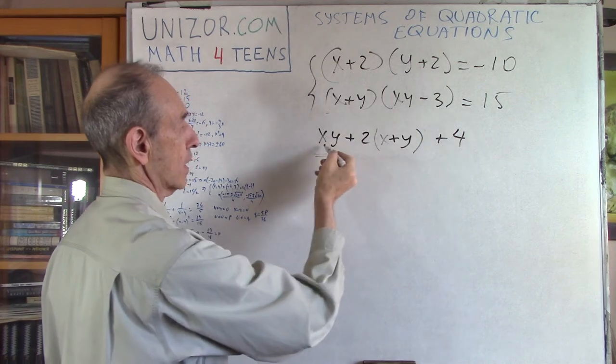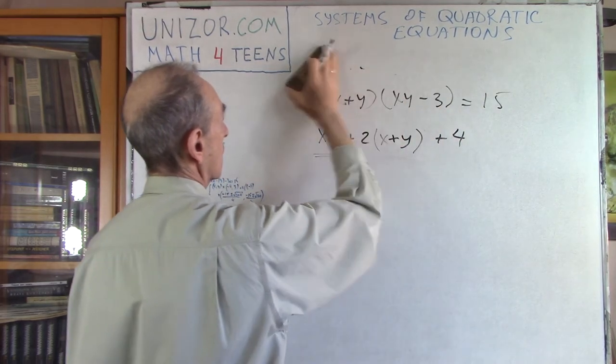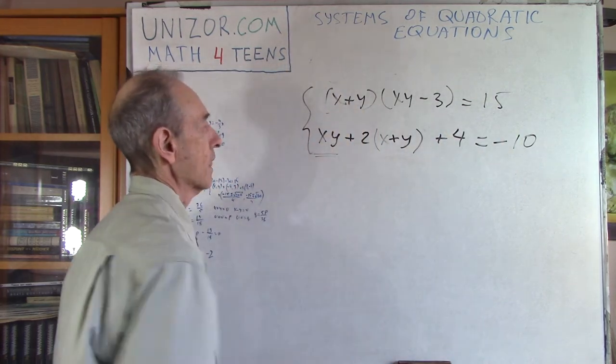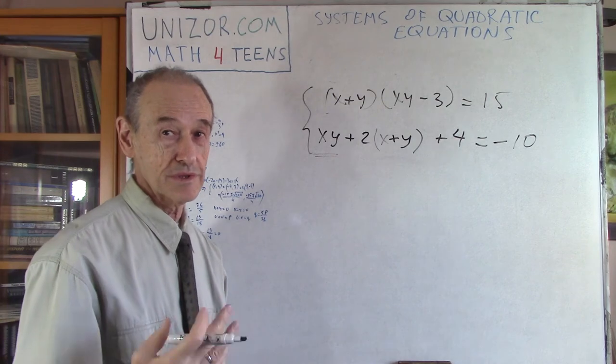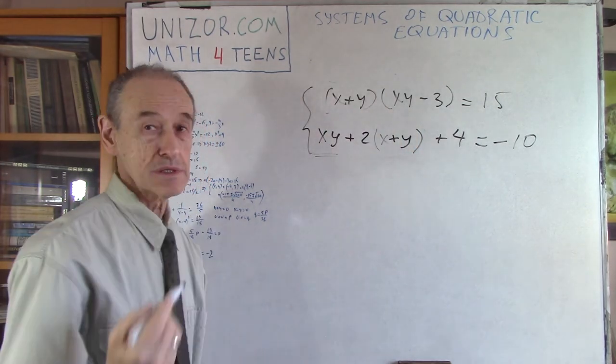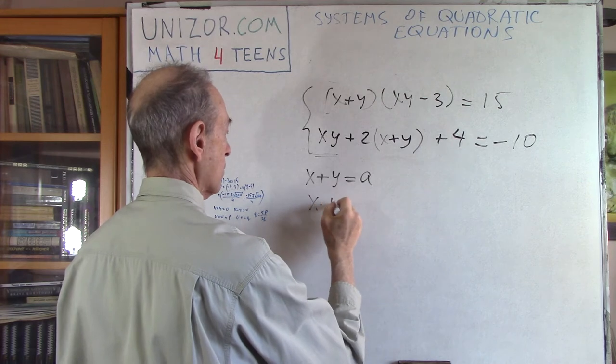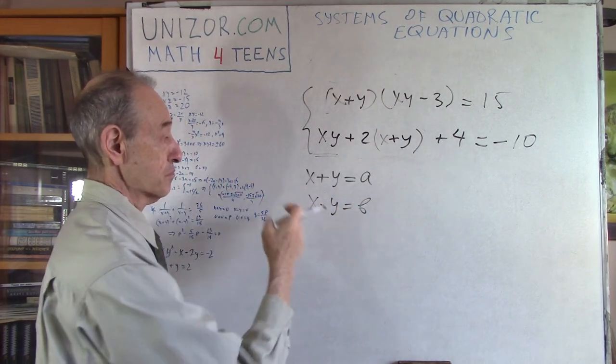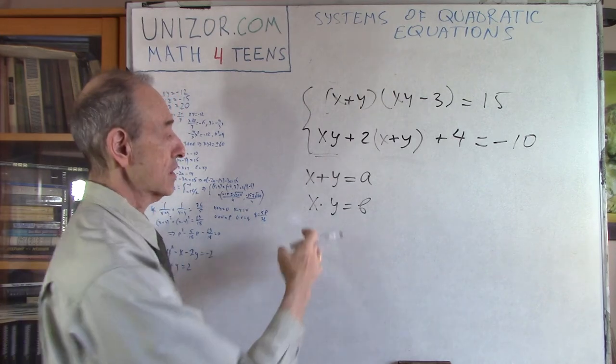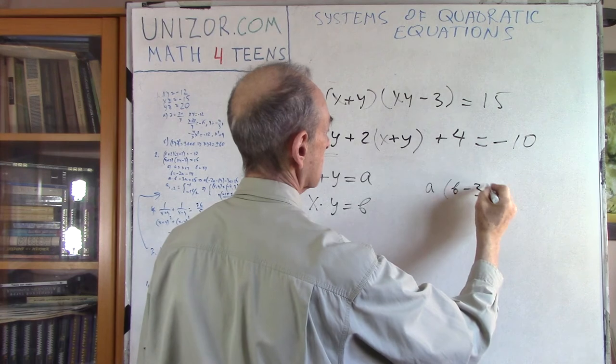Now I see that there are only symmetrical functions here. X plus Y, X plus Y, X times Y, X times Y. And what's typical in this case, I can always replace X plus Y with, let's say, A and X times Y with B.